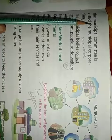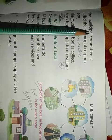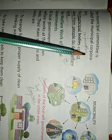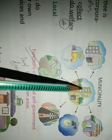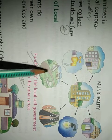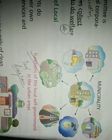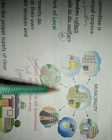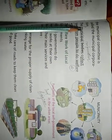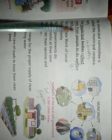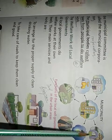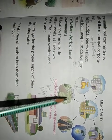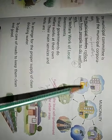Municipal committees exist in small towns and cities, while big cities have municipal corporations. The municipality provides facilities like hospitals, water supply, roads, electricity, and schools. Municipal corporations collect taxes from people for welfare work, such as water taxes, electricity fees, school fees, and park entry fees.